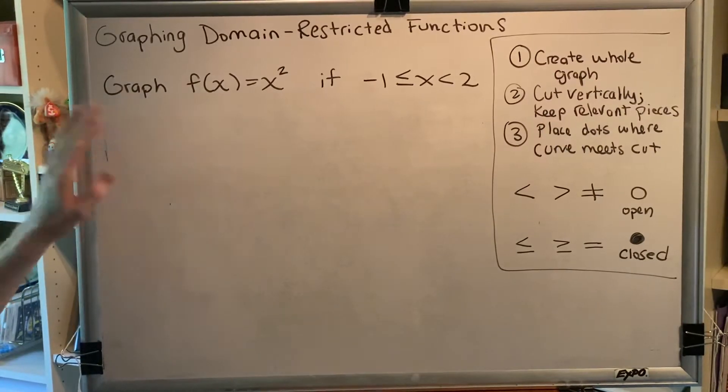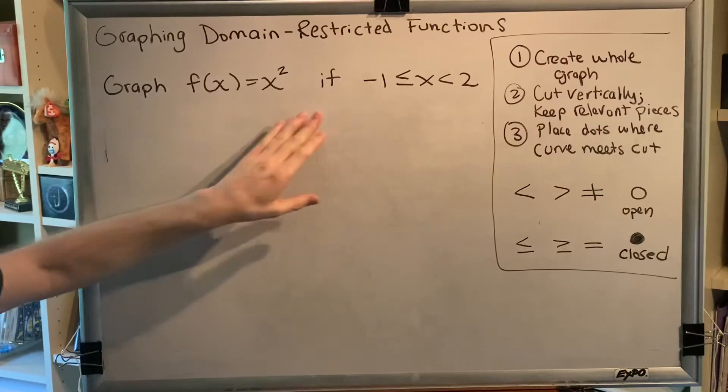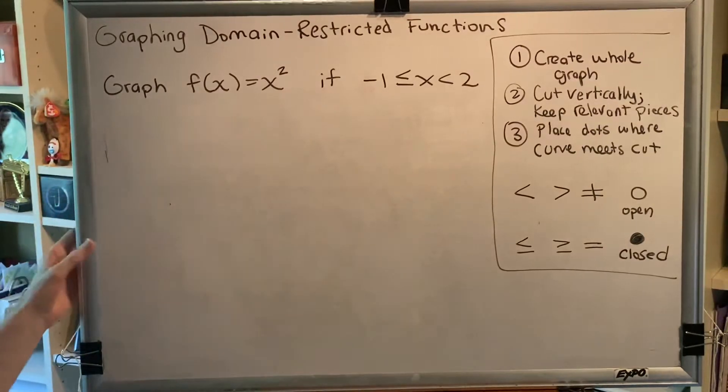Alright, in this problem we're asked to graph f of x equals x squared if negative 1 is less than or equal to x is less than 2.